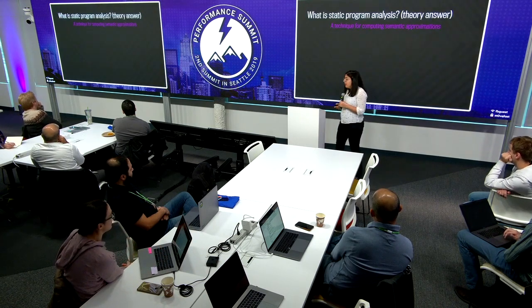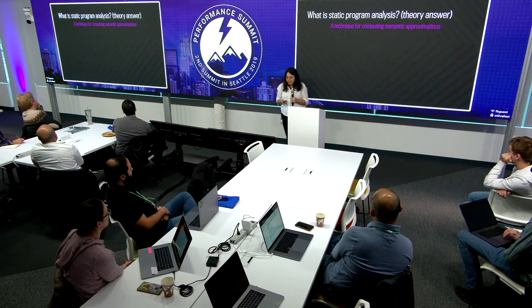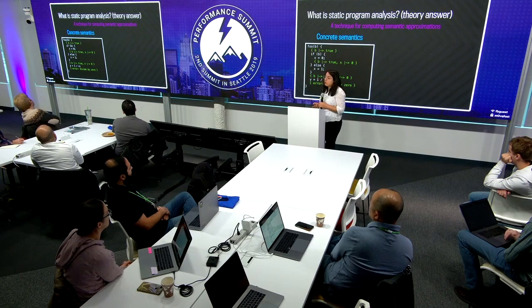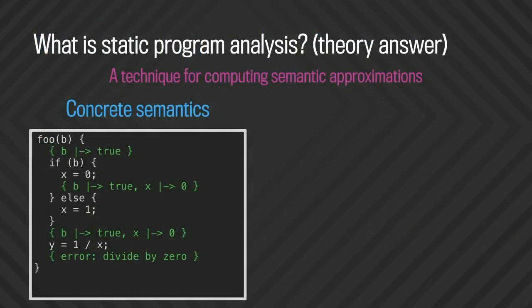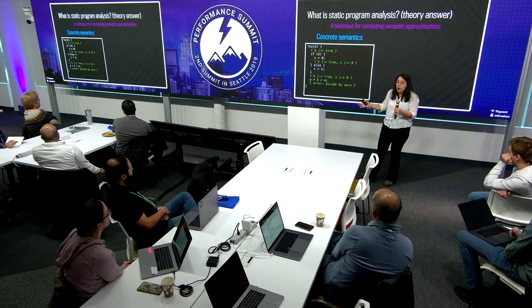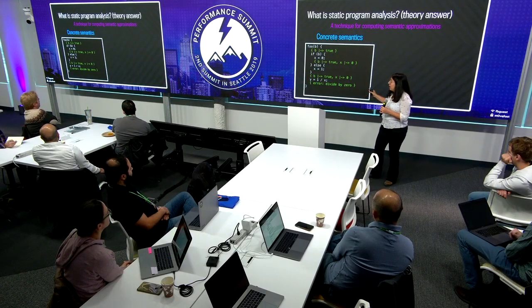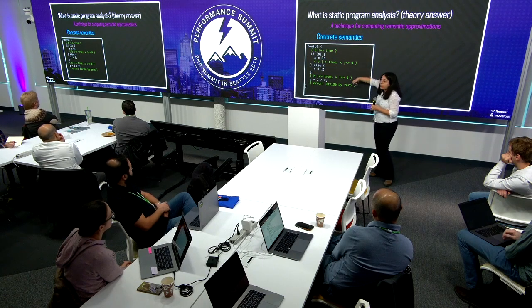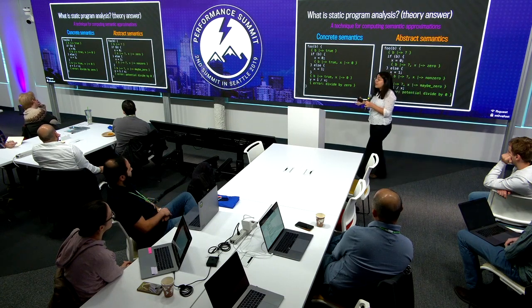So what is static analysis? Static analysis is a technique for computing semantic approximations. Imagine we have a program, and at the beginning we know that B is true. So this is like testing — you run your program and say, okay, at the beginning we'll have B is true, X will be zero. Since B is true, we won't take the else branch. Then here we'll have B is true, X is zero, and then Y equals one over X — boom, you will have a divide-by-zero error. You run the program, you will hit the bug. But this is not possible to do for all combinations in a big system.